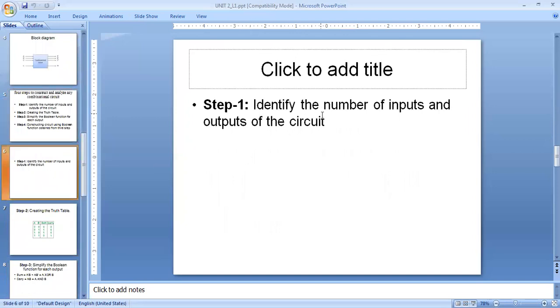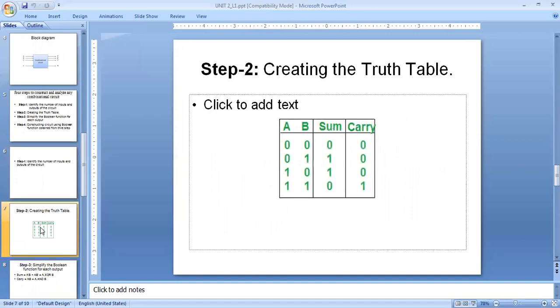So as per this step, first step is to identify the number of inputs and outputs of the circuit. Consider this truth table. In this truth table, we have A and B which represents that we have only two inputs, as well as the outputs may be sum and carry which indicates the adder circuits. So A and B are the two inputs. Possible combinations of input are 0 0, 0 1, 1 0, and 1 1.